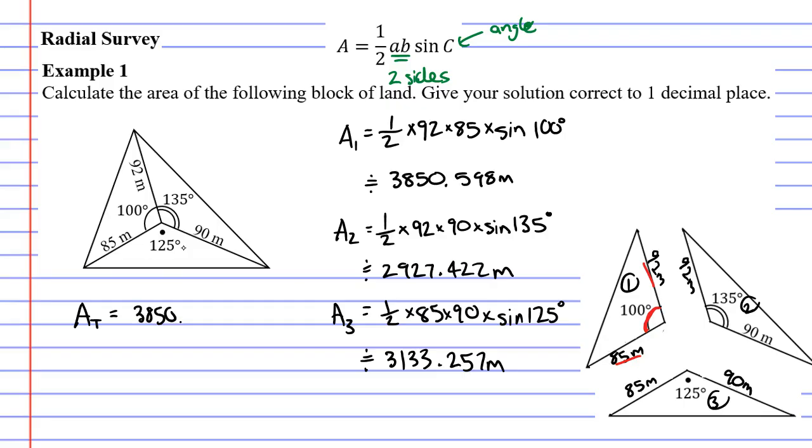I've got 3850.598 plus 2927.422 plus 3133.257. I'm going to add all of these up.